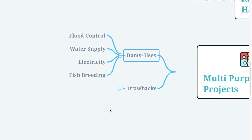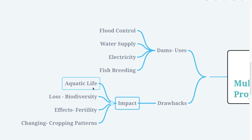But there are drawbacks too. The negative aspects of dams include their impact on aquatic life and loss of biodiversity. During the construction of dams, a lot of flora and fauna is lost. Many villages also have to be shifted from one place to another, and dams affect soil fertility as well.